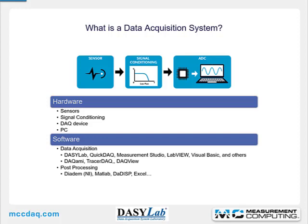A data acquisition system is a sensor connected to signal conditioning, connected to an analog-to-digital converter, and then to the PC. The hardware is typically sensors, signal conditioning, the DAC device, and the PC. Software options include DAISYLAB, Data Translation's QuickDAC, National Instruments Measurement Studio, NI LabVIEW, Microsoft Visual Basic, and others. Many vendors include out-of-the-box software such as Measurement Computing's DACME, Tracer DAC, and IOTech's DACVUE. For post-processing, many customers use Excel, NI's Diadem, MATLAB, or Dataspeed.